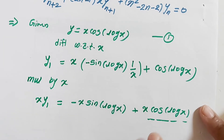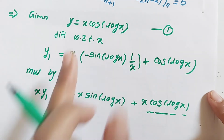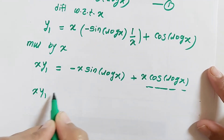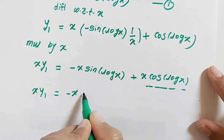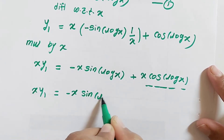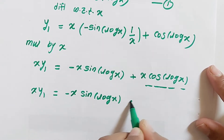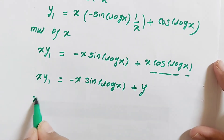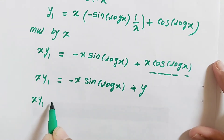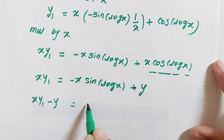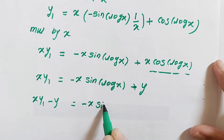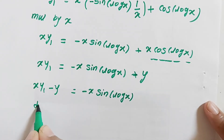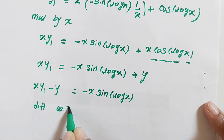Now x·cos(log x) is nothing but y from equation 1, so we substitute y in place of it. Thus x·y₁ equals minus x·sin(log x) plus y. Shifting y to the left-hand side gives x·y₁ minus y equals minus x·sin(log x). Now we take the derivative of this with respect to x again.